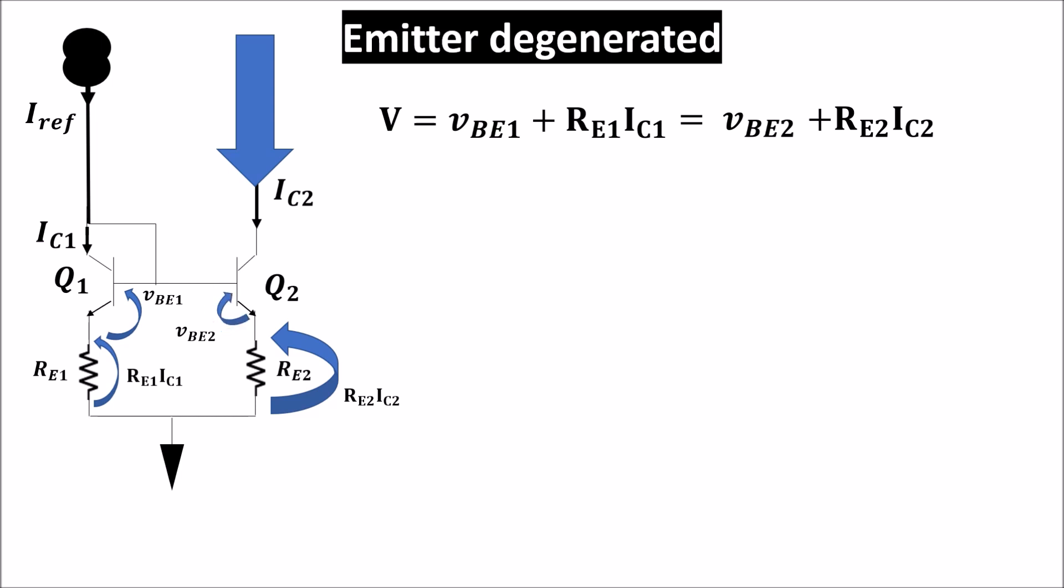And if V_BE2 gets smaller, it forces the transistor Q2 to lower I_C2. In this way, we control I_C2 through the negative feedback represented by the emitter resistor.